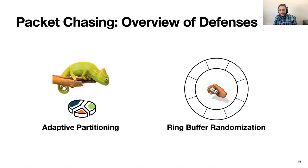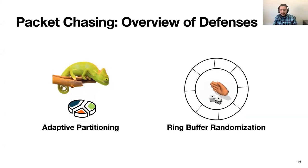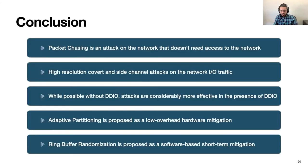In addition to the vulnerability and the attack, we propose a short-term software-based defense called ring buffer randomization and a low-overhead hardware-based defense called adaptive partitioning. In summary, we propose Packet Chasing: an attack on the network that doesn't require access to the network. We build high-resolution covert and side-channel attacks on network traffic. These side channels and covert channels are possible even without DDIO, and we propose adaptive partitioning and ring buffer randomization as two possible mitigation schemes.